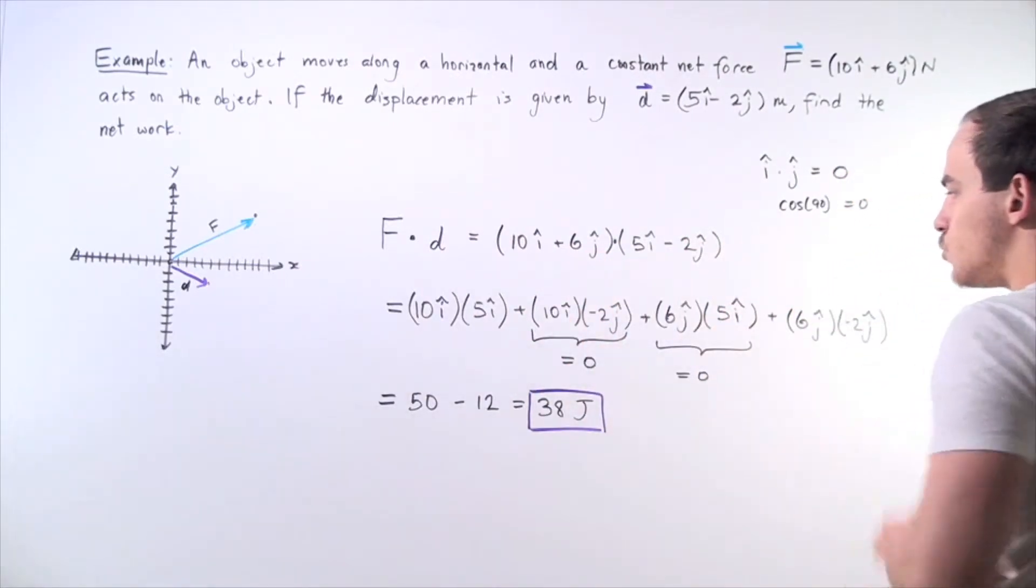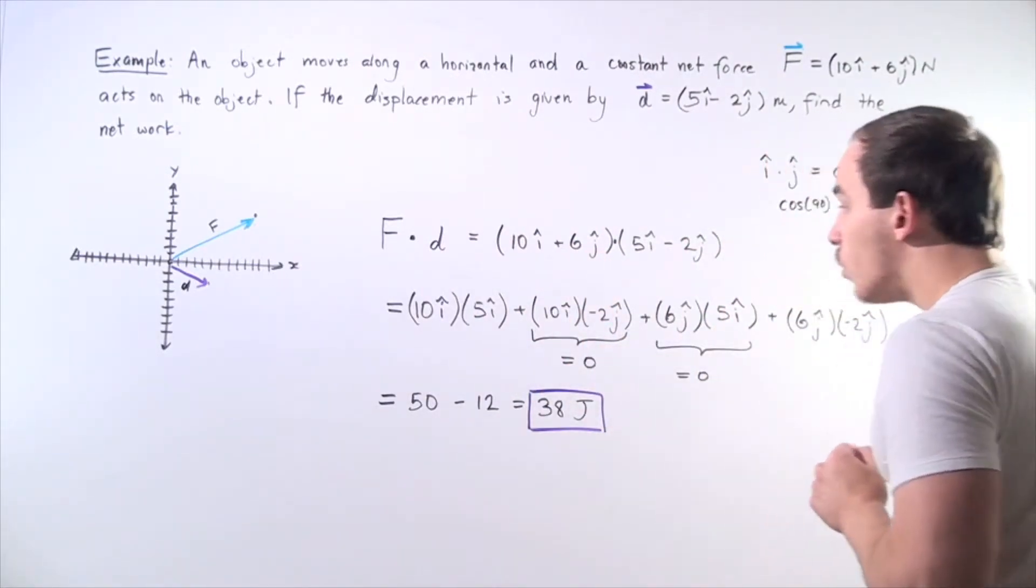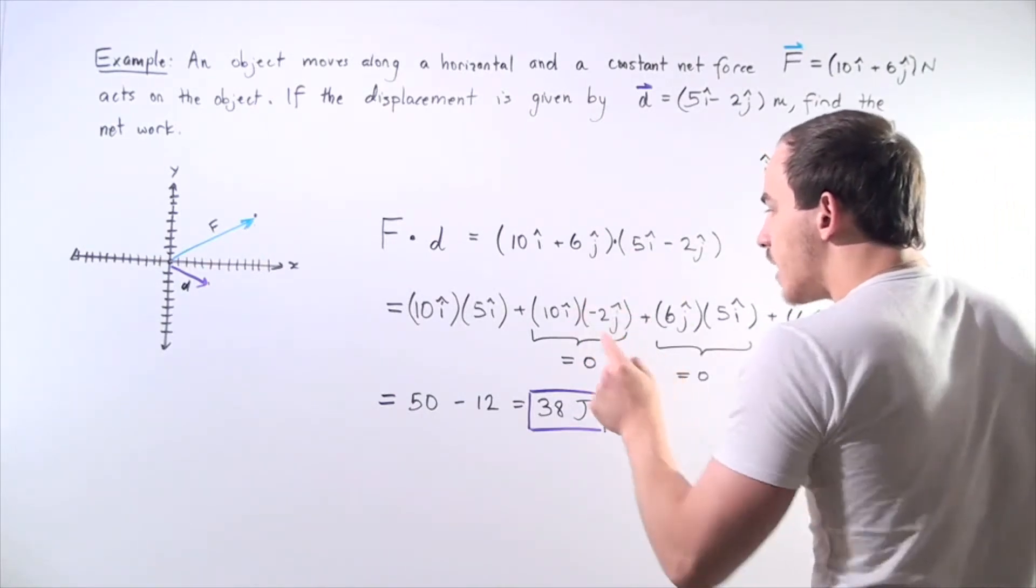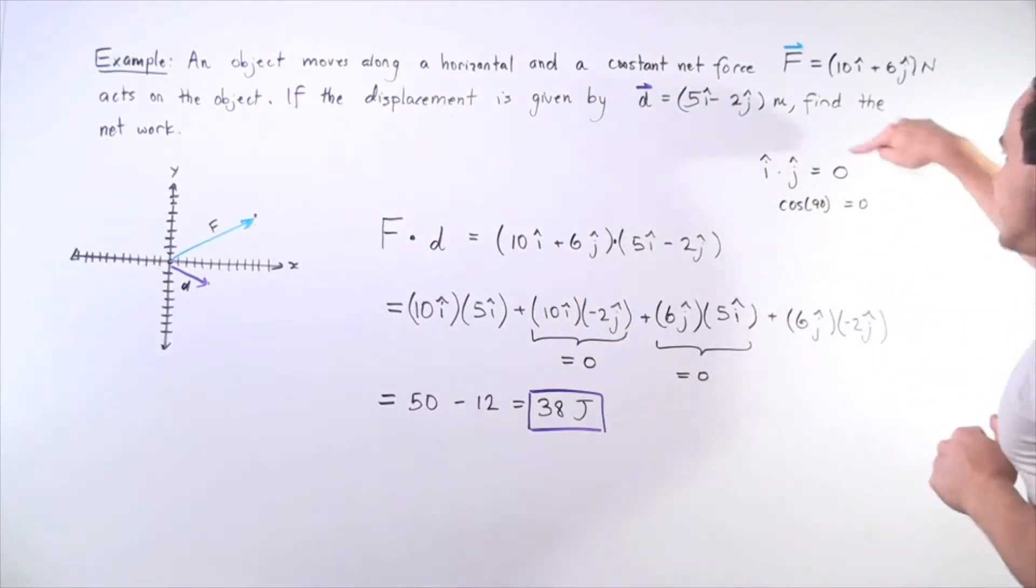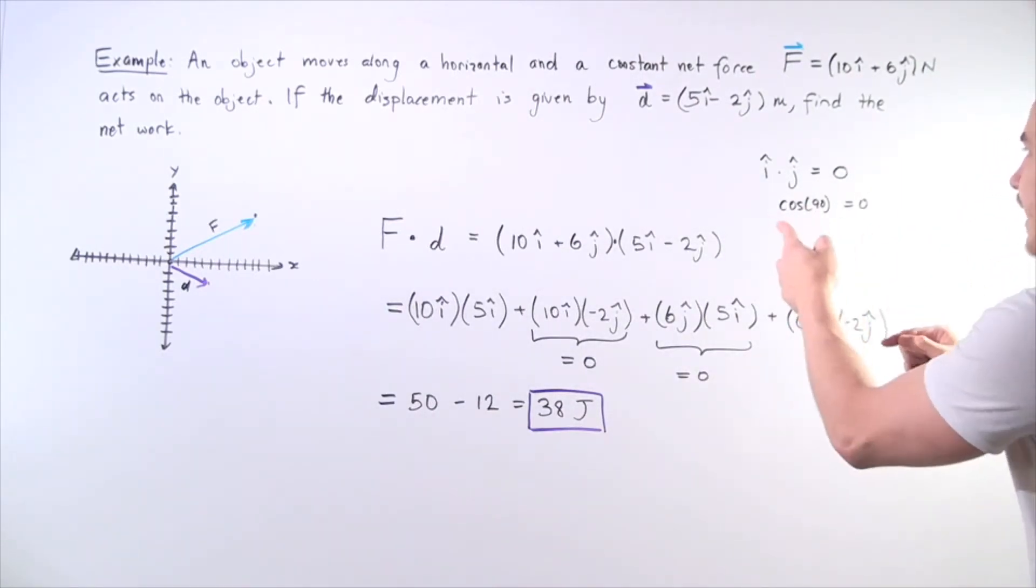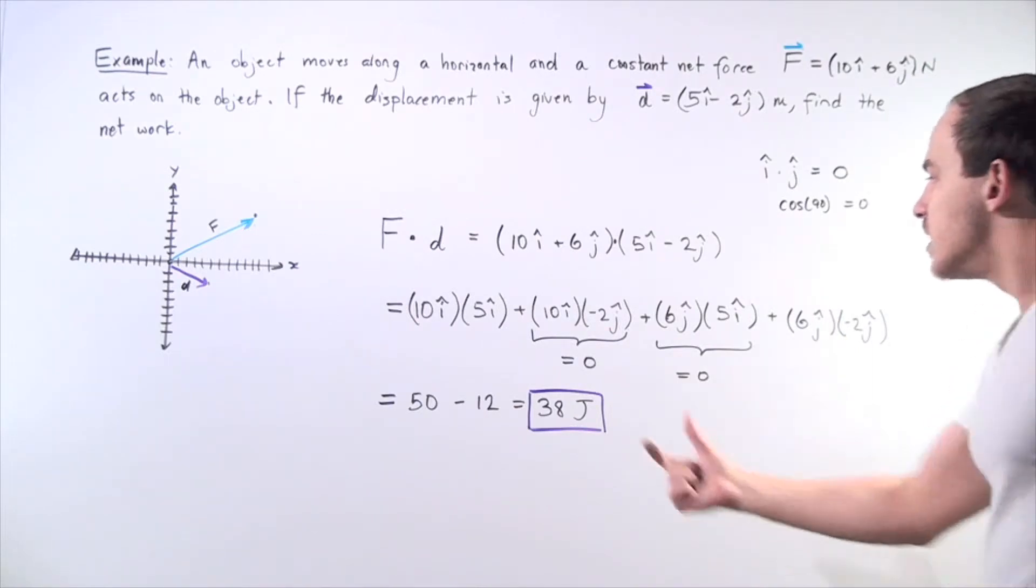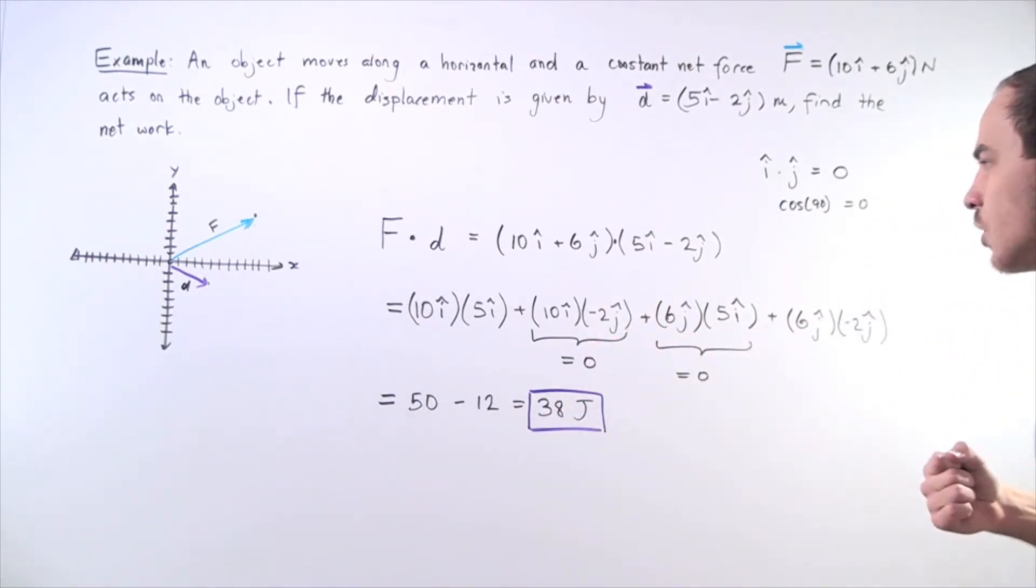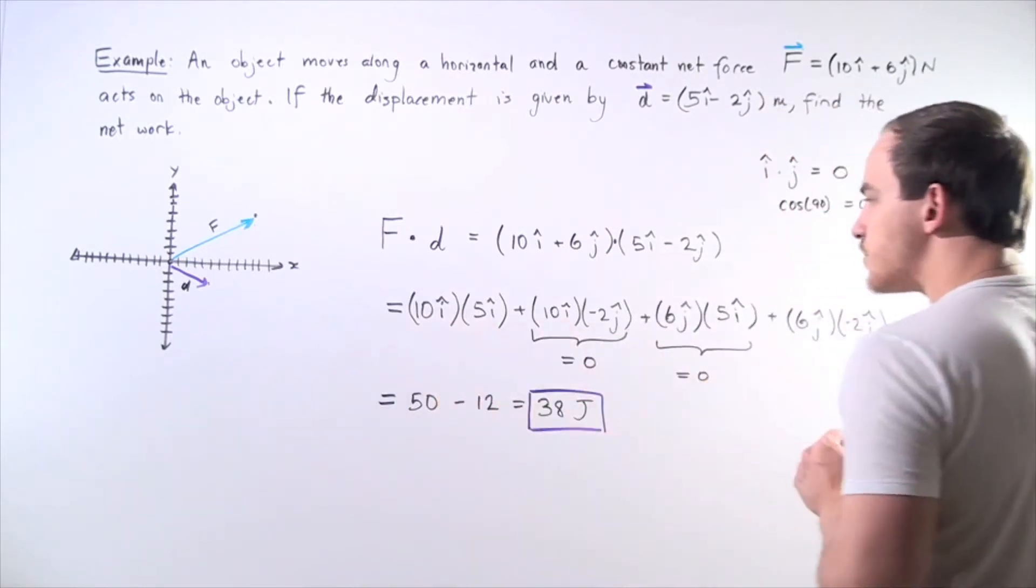Notice the middle values go to zero. Why? Well because the dot product of i hat and j hat is always equal to zero because the cosine of the angle 90 separating the i hat and j hat is zero. So these two terms go to zero and I'm simply left with these final terms.